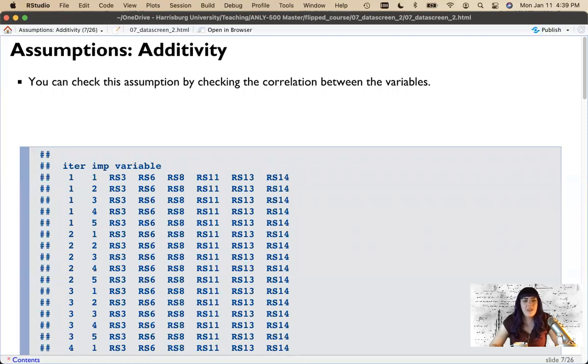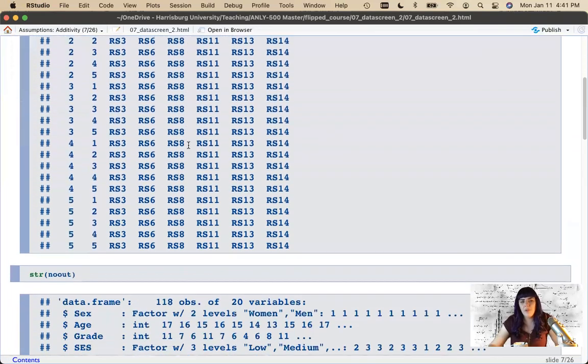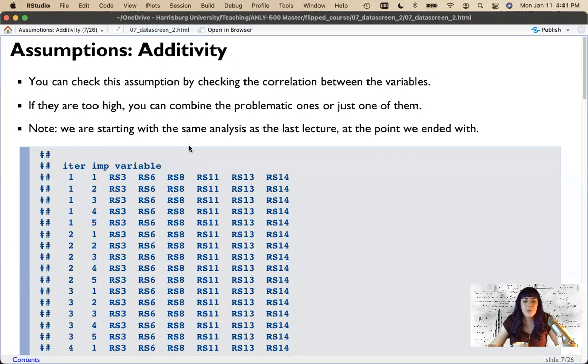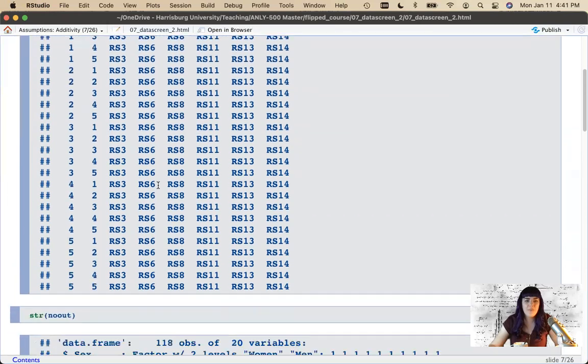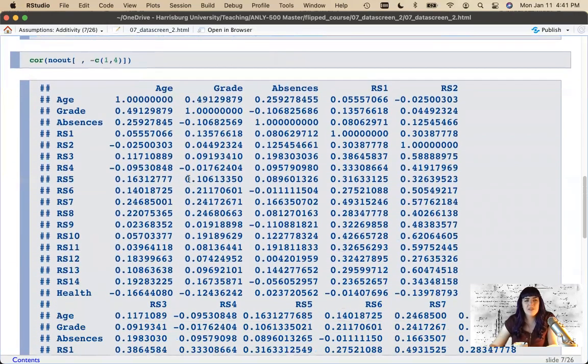Now the best way to check for this is to check for the correlation between variables. And if those correlations are too high, you combine the problematic ones or pick one. Or in regression, there are specific ways to handle this exact problem. And notice that we're starting with the same analysis as the last lecture. And I mostly hid it from you, except for the fact that mice pretty much prints out no matter what you try to tell it not to do. So this is the mice section from before. But here's our structure of our no-out data set we were working with. This is our last step with no outliers.